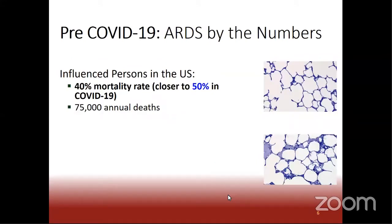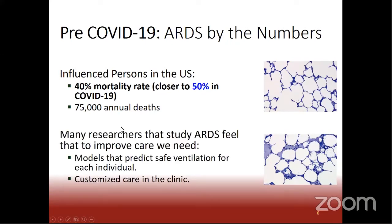In a pre-COVID era, ARDS was already a serious concern we were working to solve. In the United States, with the best care available, if you're being mechanically ventilated with ARDS, you had a 40% mortality rate — meaning your odds of making it were only 60%. In the COVID-19 era, this has dropped to 50%, so your chances of making it are 50-50. Pre-COVID-19, this caused 75,000 annual deaths in the United States.